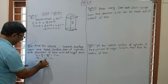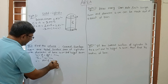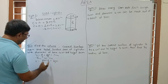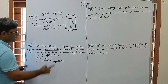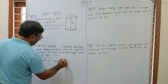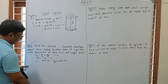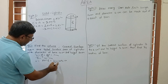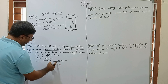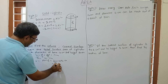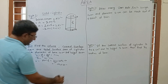We have to find volume first. Volume of cylinder is πR²H. Value of π is 22/7, radius is 7 cm, and height is 80 cm. So volume = 22/7 × 7 × 7 × 80. The 7s cancel, giving 22 × 7 × 80.